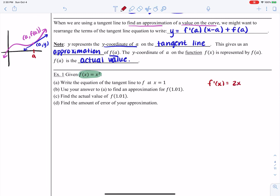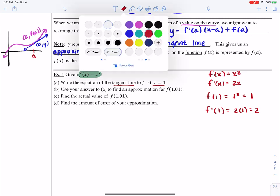And if I want to build a tangent line to f at x equals 1, we would need to find both f of 1 and f prime of 1. So f of x is x squared, f of 1 would be 1 squared or 1, f prime of 1 would be 2 times 1 or 2. So now I have enough information to answer part a and write a tangent line.